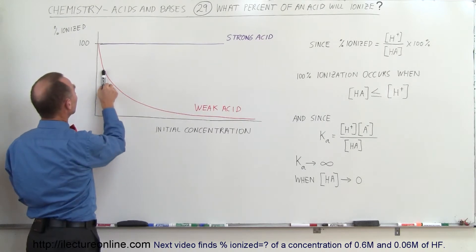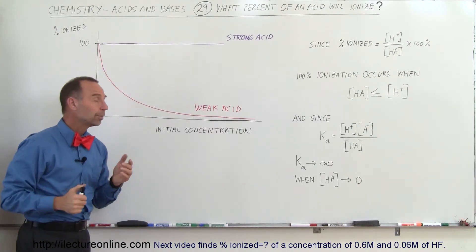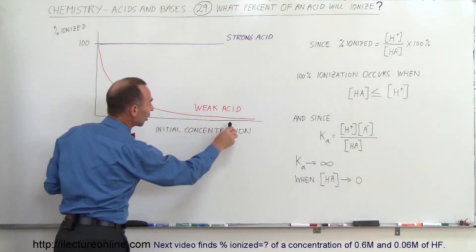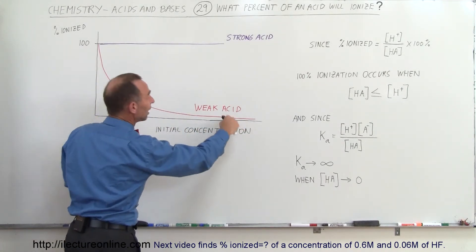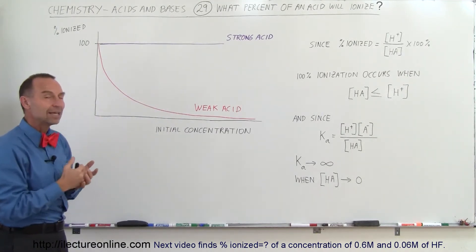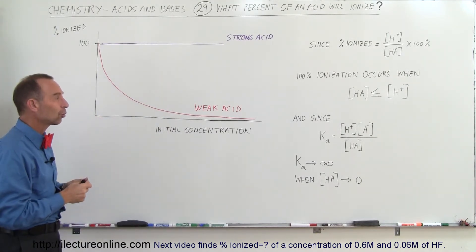If there's a very small concentration, there'll be a large percentage of the ionization. If there's a large concentration, then of course the percentage of the ionization goes way down for a weak acid. And so that's the basis of understanding of how this works.